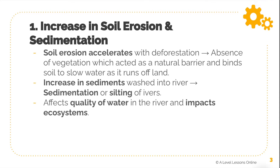In this area itself, when deforestation has taken place, it can lead to an increase in soil erosion and sedimentation. Soil erosion accelerates with deforestation because the absence of vegetation — which acts as a natural barrier and helps to bind the soil together through its roots — is removed. When you get rid of these trees, the soil is now very loose, so it accelerates soil erosion when water runs off this surface.